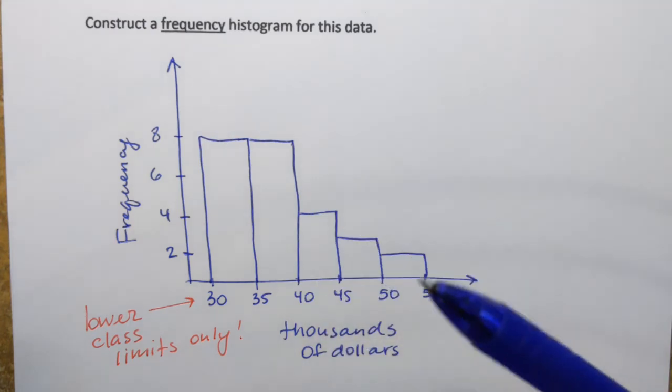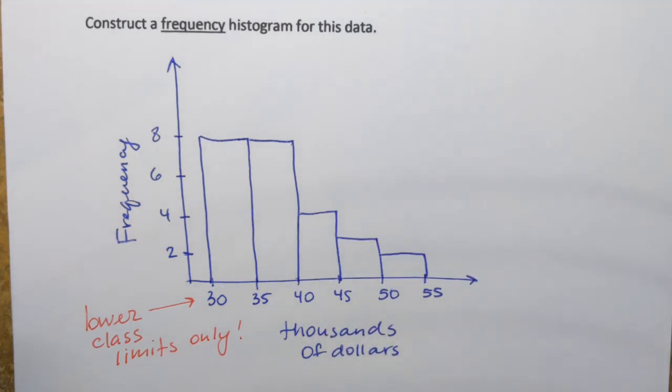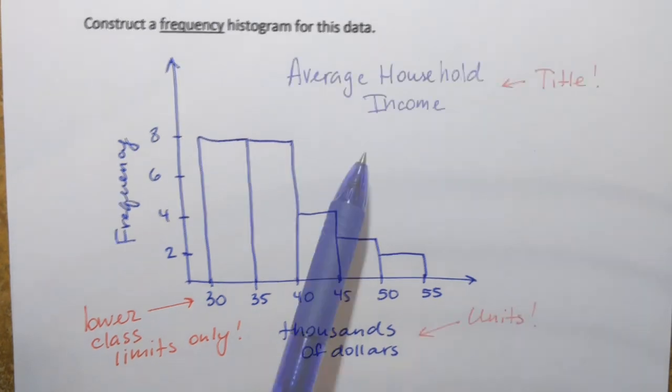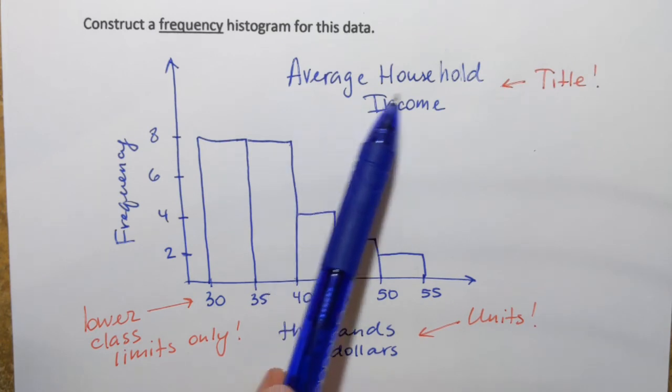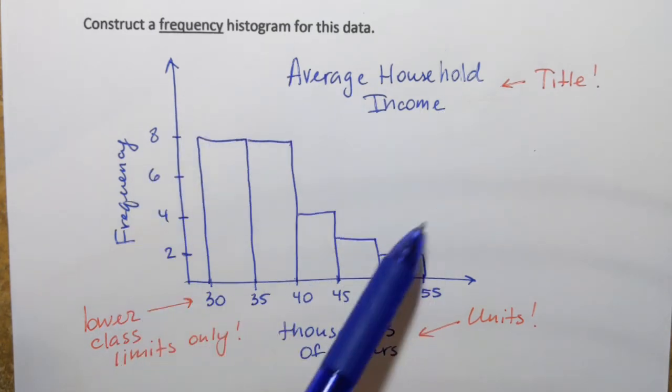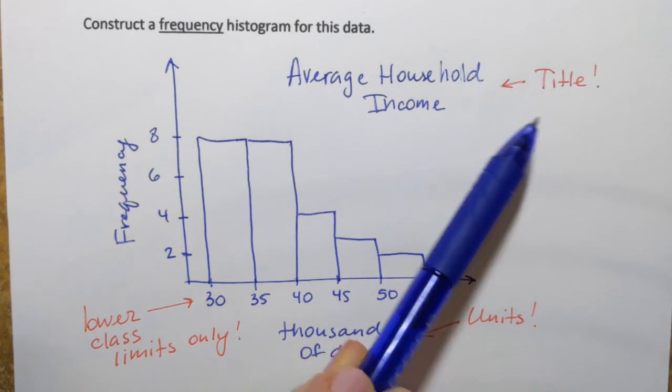So without having a title here, if someone looks at this picture, they would have no idea what's going on. Those thousands of dollars can represent anything. So I need to add the title. So I simply put average household income to describe what this histogram is about, title.